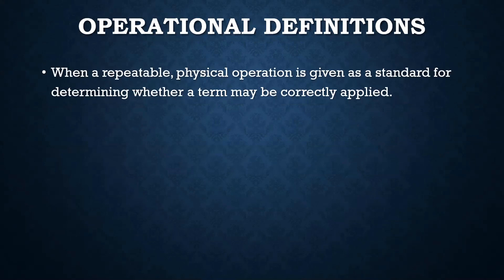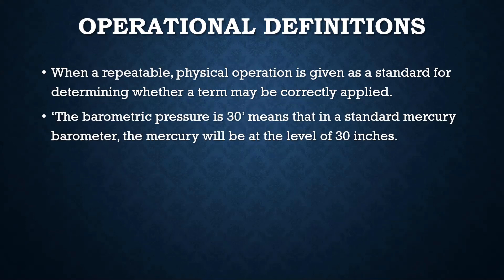Finally, operational definitions are when a repeatable and physical operation is given as a standard for determining whether a term may be correctly applied. You provide a standard — here's what we're going to do to know for sure if this term applies. For example, in meteorology, the barometric pressure is 30 means that in a standard mercury barometer, the mercury will be at the level of 30 inches. That's a way of providing an operational definition.